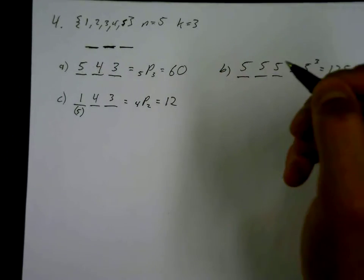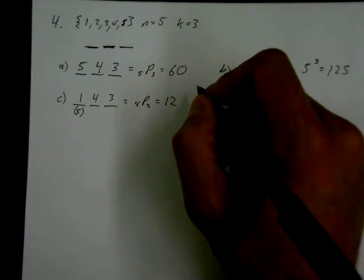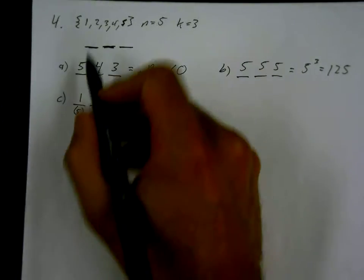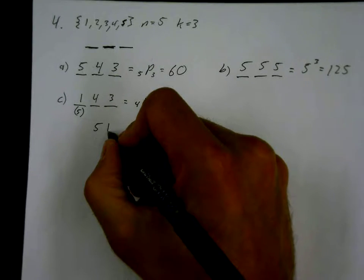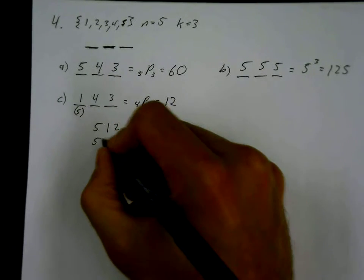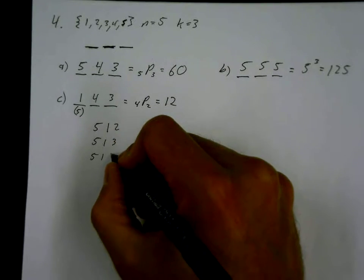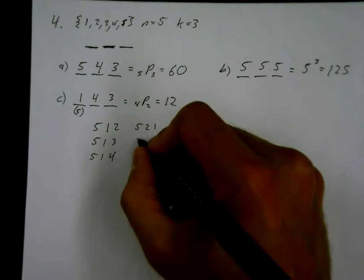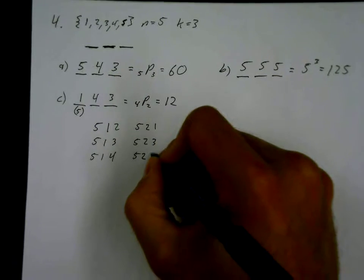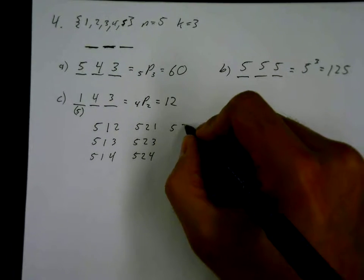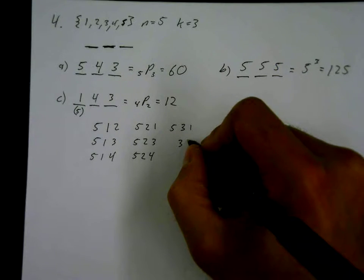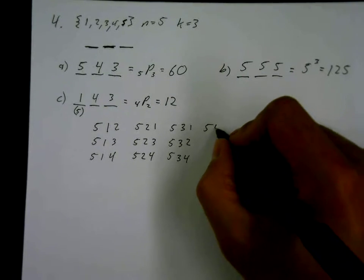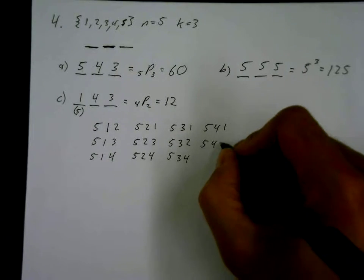Now it says list all the numbers fitting this description. They all start with five. If five is first and then one, the options are 512, 513, 514. If two comes second: 521, 523, 524. If three comes second: 531, 532 — can't do 533, then 534 — can't do 535 because five is in front. And lastly with four second: 541, 542, 543. Those are all twelve possibilities.